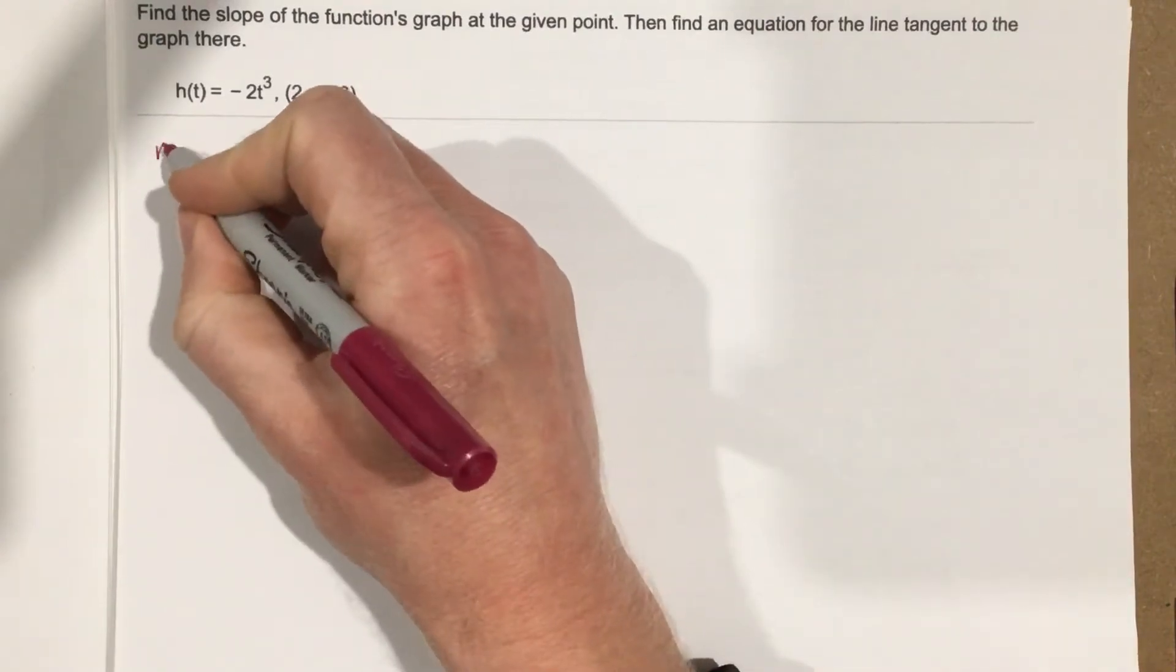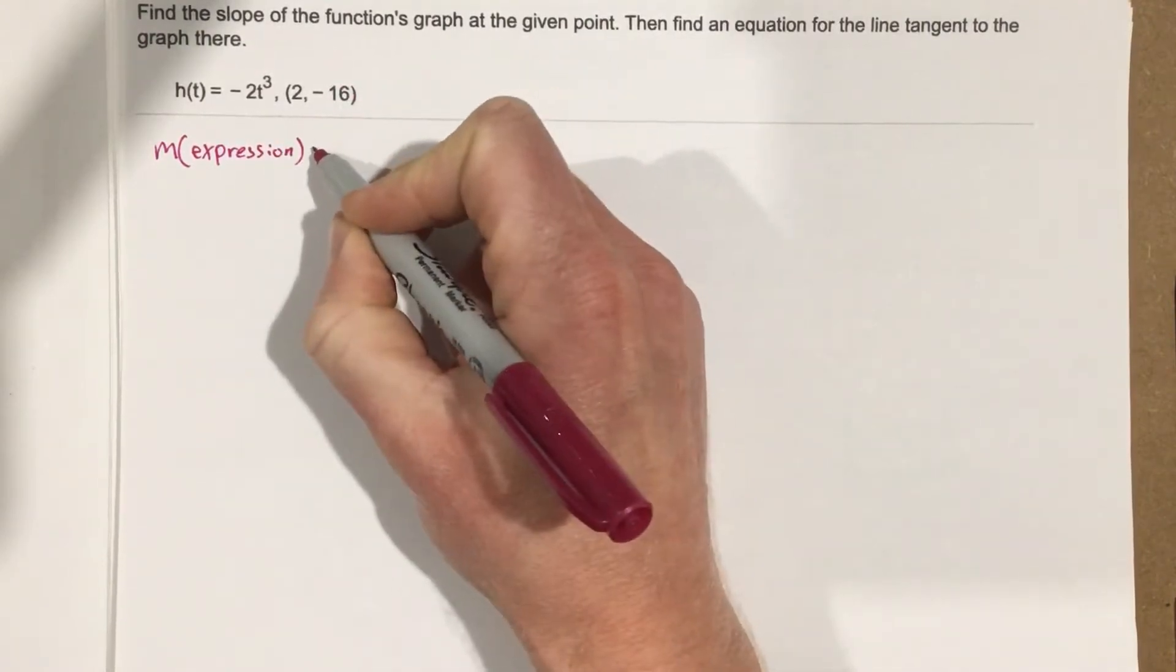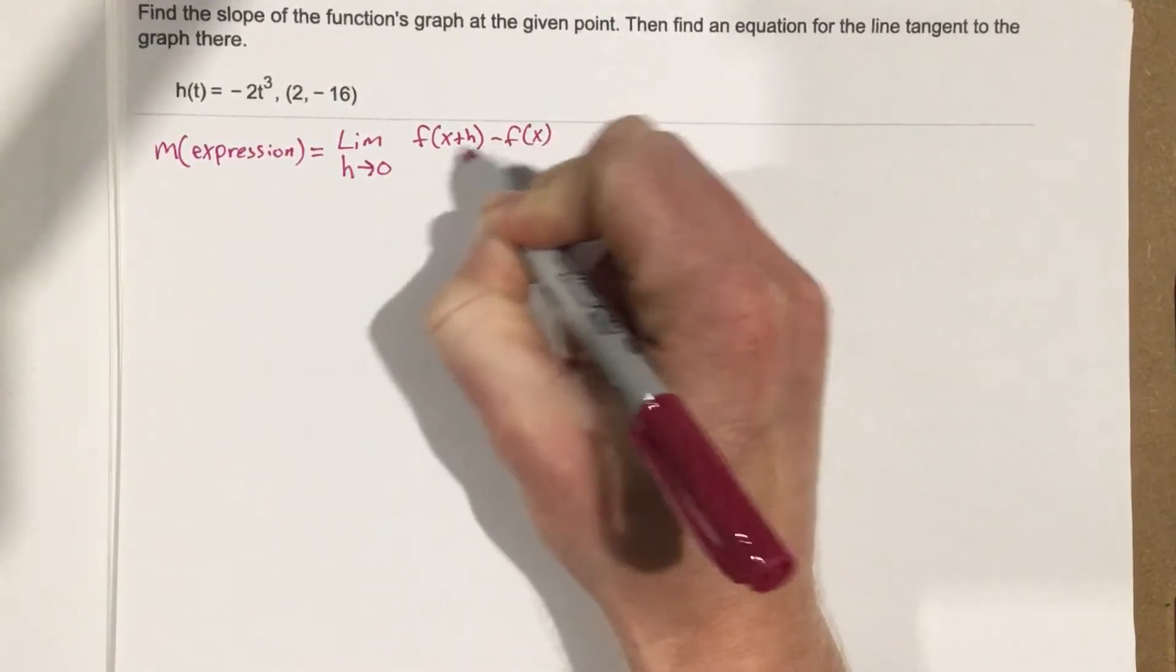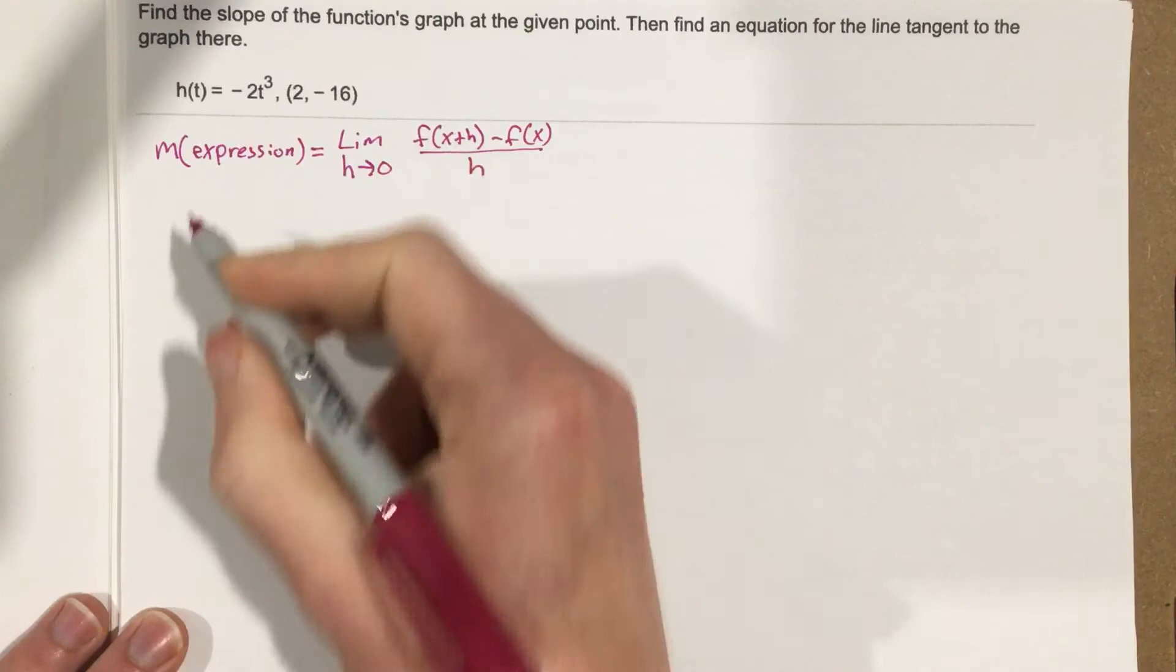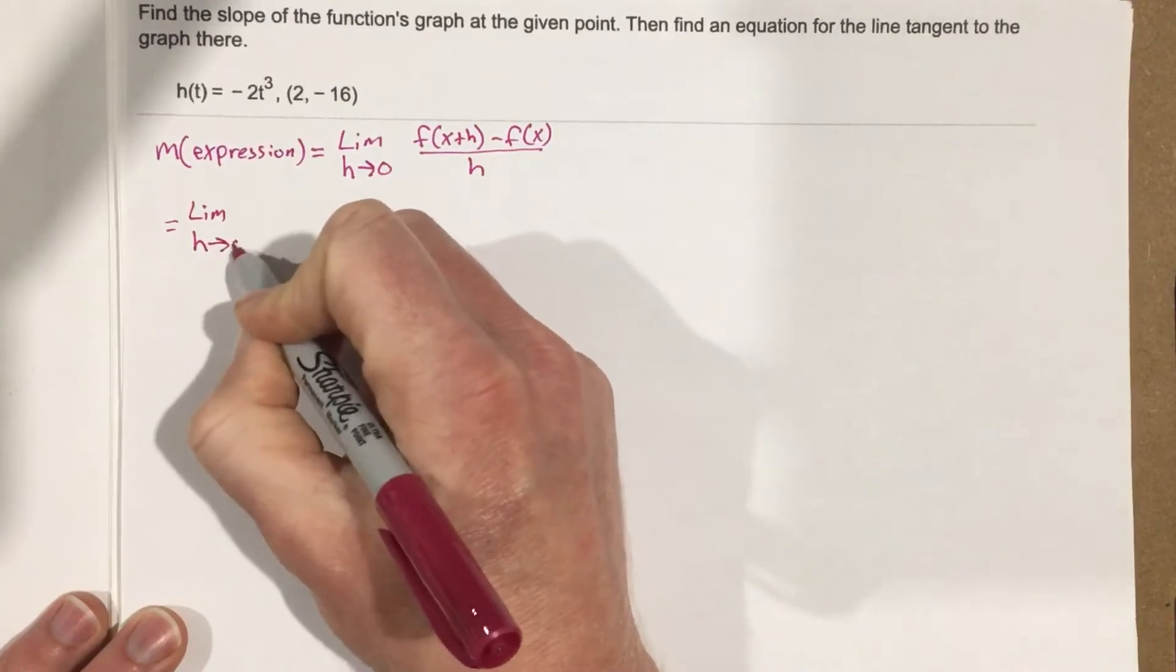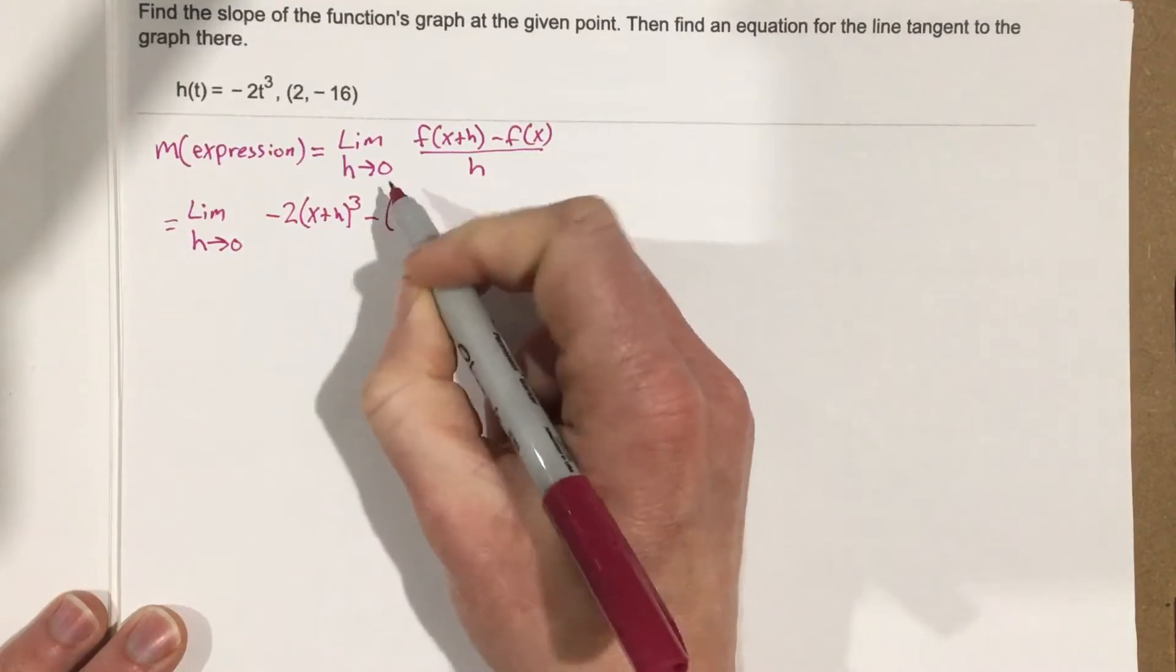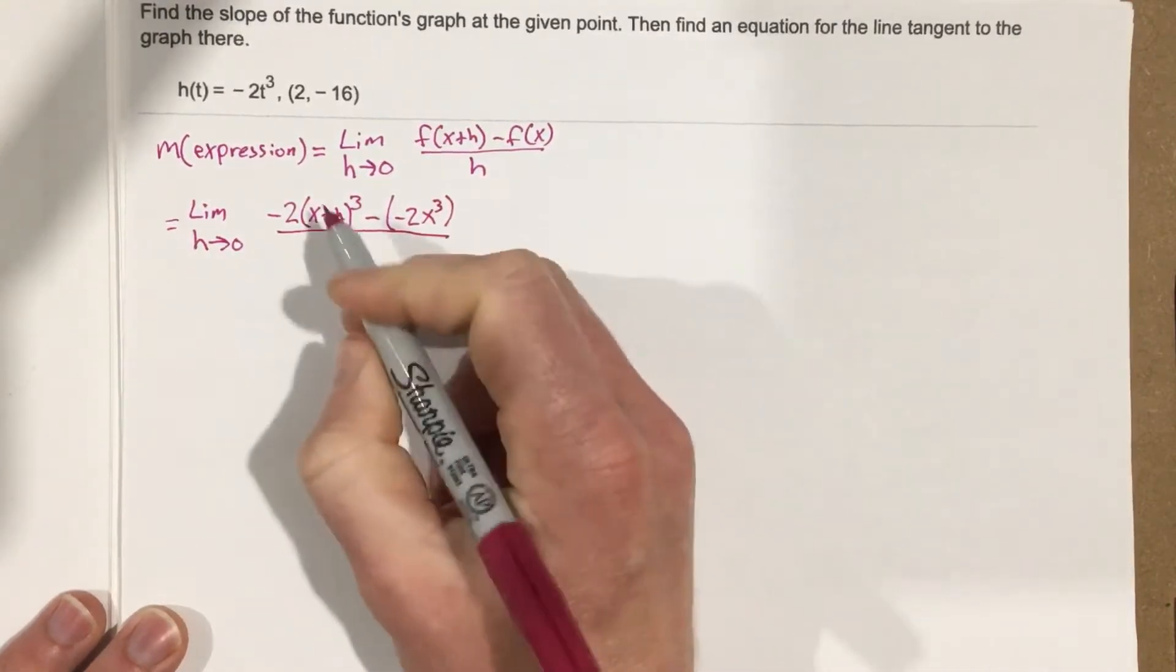So we're going to start by finding the slope expression. And I'm going to say that that is equal to the limit as h approaches 0 of f of x plus h minus f of x all over h. So let's start by taking this function and plugging in x plus h. And we end up with the limit as h approaches 0 of negative 2 times x plus h cubed minus negative 2x cubed, and that's all over h.